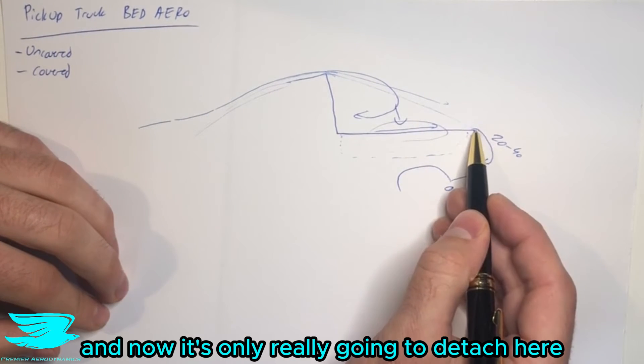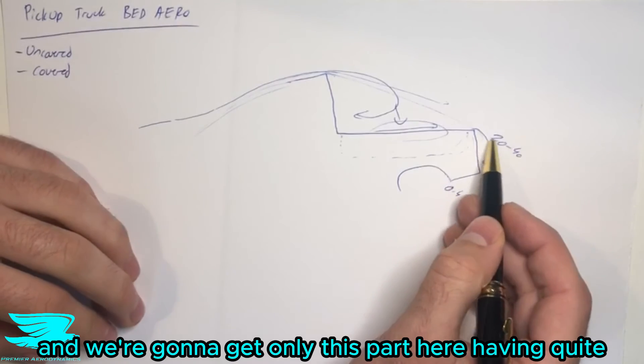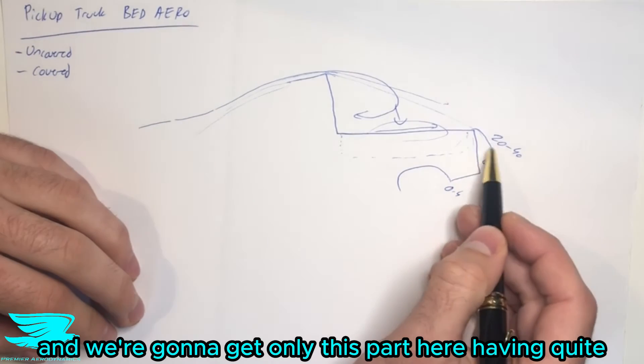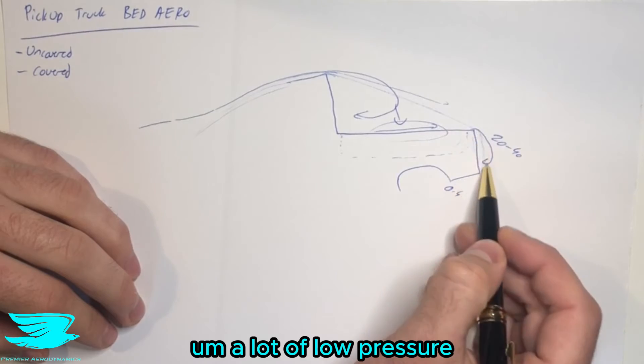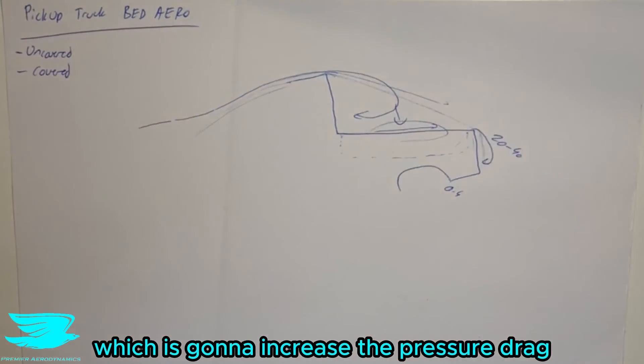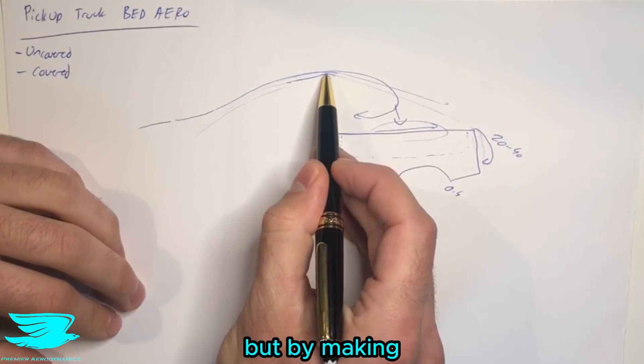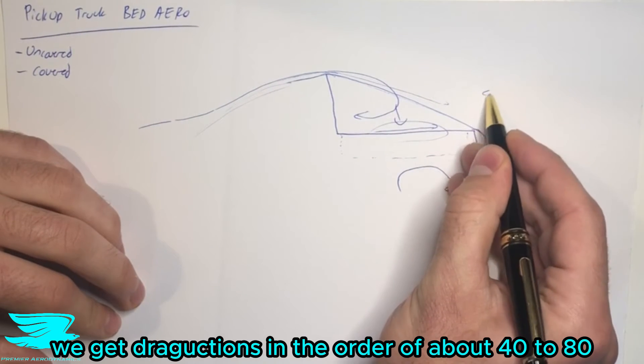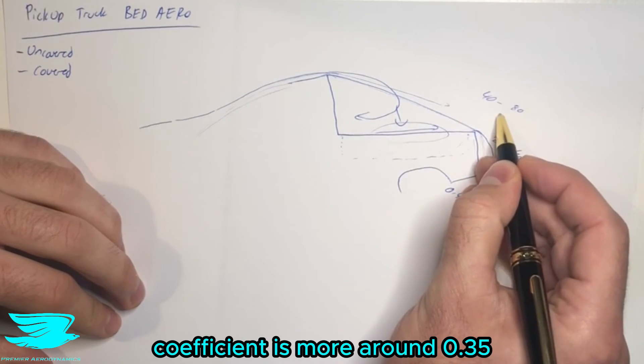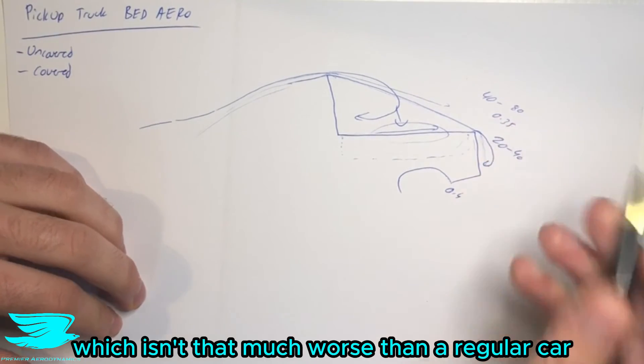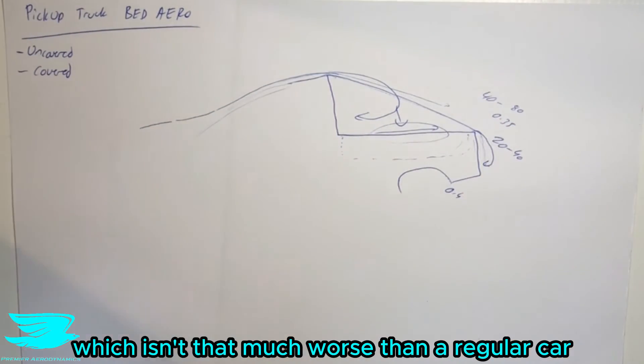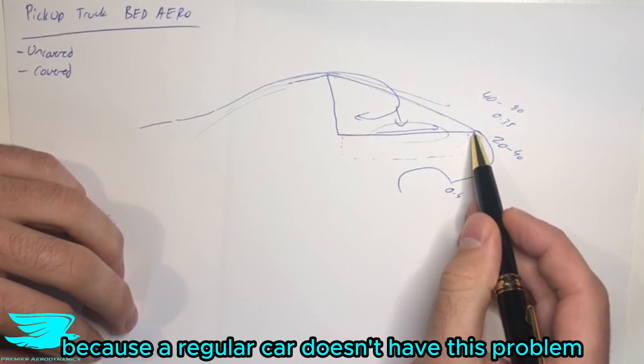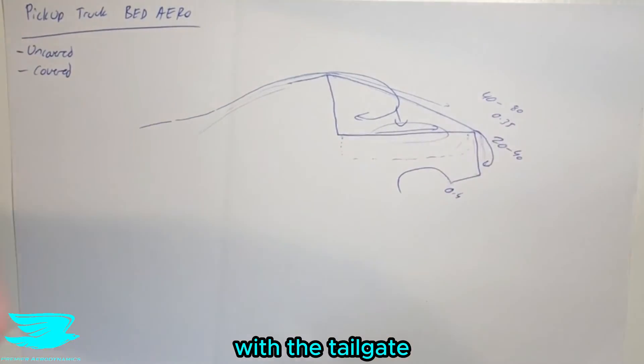which we can't really stop. And we're going to get only this part here having quite a lot of low pressure, which is then going to increase the pressure drag. But by making the bed cover come down more like this, we get drag reductions in the order of about 40 to 80 counts. So now the drag coefficient is more around 0.35, which isn't that much worse than a regular car because a regular car doesn't have this problem at the back here with the tailgate.